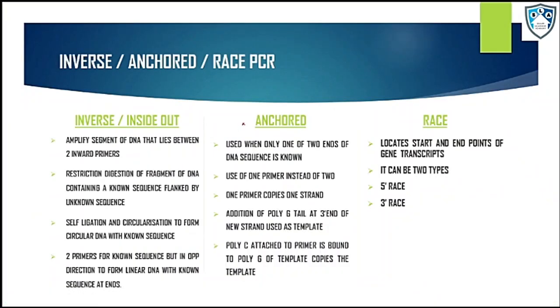The one that we are left with is anchored PCR and RACE. In case of anchored PCR, only one primer is used instead of two. One primer copies one strand. Then we will add a poly-G tail at the three prime end of the new strand which would act as a template, and then we will attach a poly-C to the primer which would bind to the poly-G of the template.